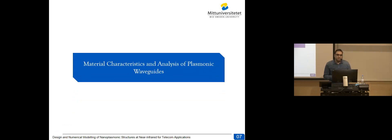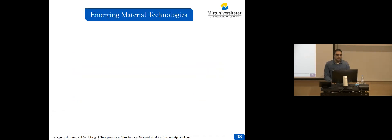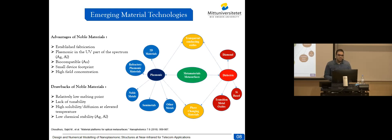In this chapter, I explain material characteristics and analysis of plasmonic waveguides. There have been several emerging materials technologies like plasmonics, metamaterials, 2D materials, diamond transparent conducting oxides, phase changing materials, and others. Plasmonics specifically can be achieved using 2D materials, refractory plasmonic materials, and noble materials, among others. However, we chose to make use of noble materials for advantages such as established fabrication processes.